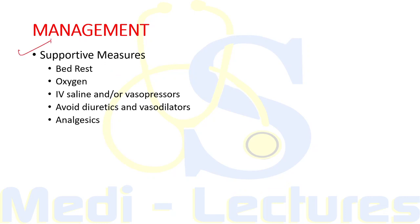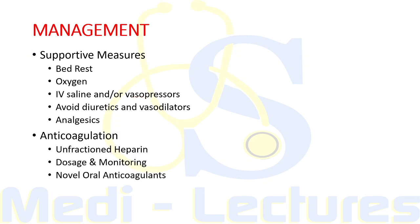For management, supportive measures include prompt recognition and treatment, bed rest in acute stages, oxygen for hypoxic patients, IV saline and vasopressors such as noradrenaline to maintain venous pressure in massive embolism. Diuretics and vasodilators should be avoided as they decrease cardiac output. Analgesics like opiates can be used.